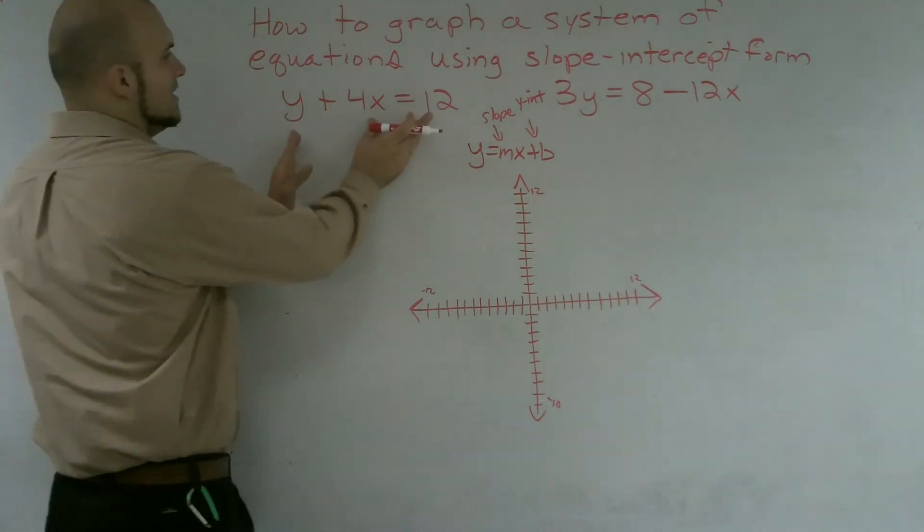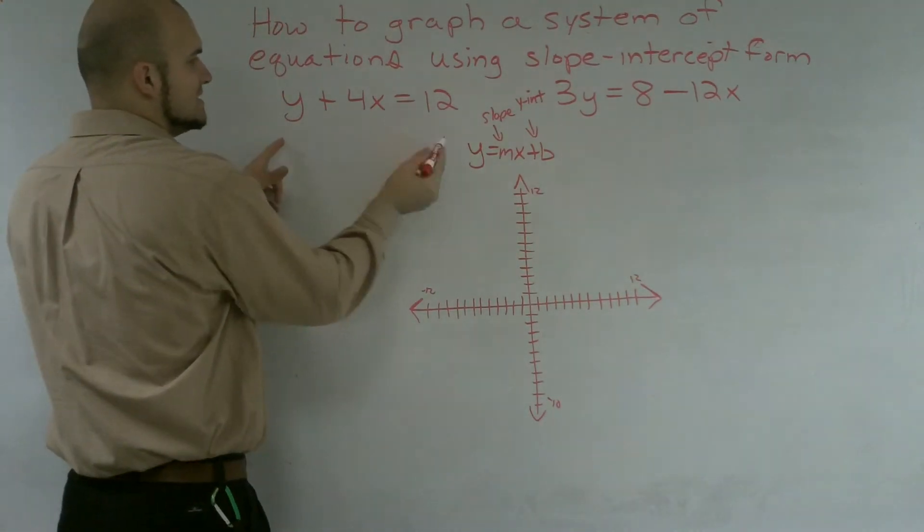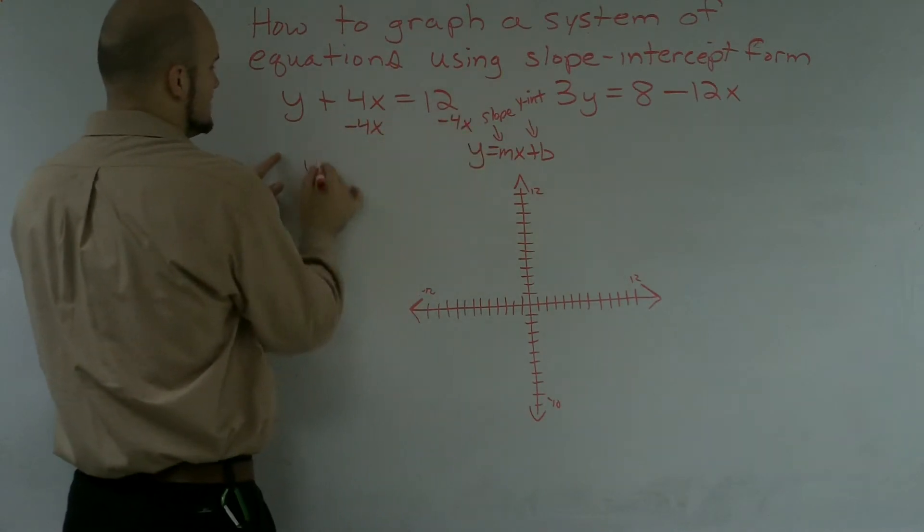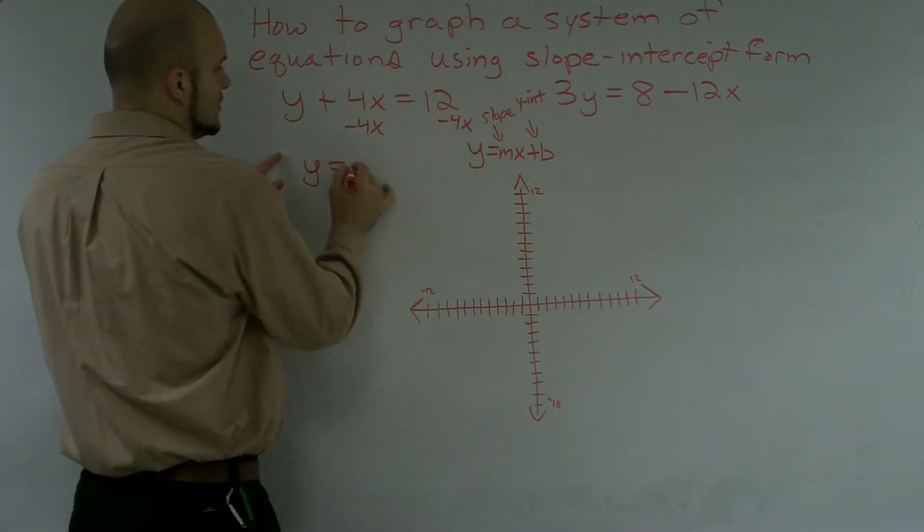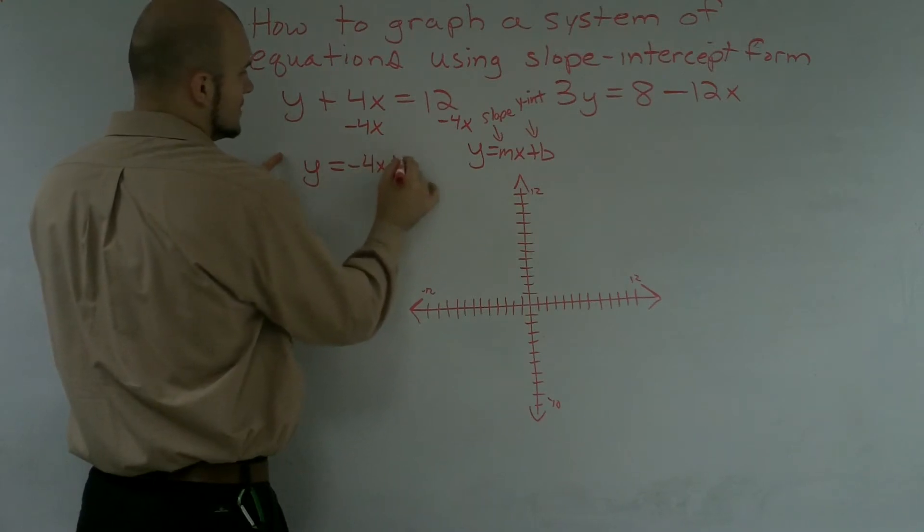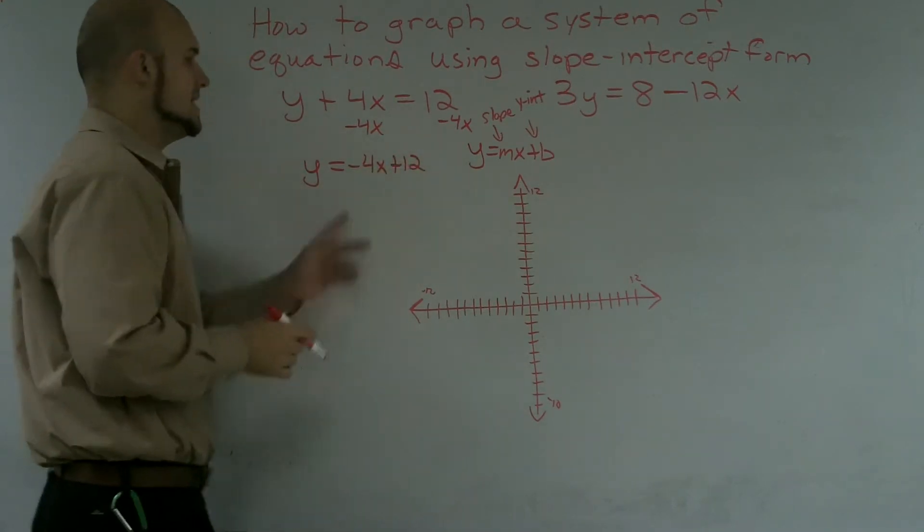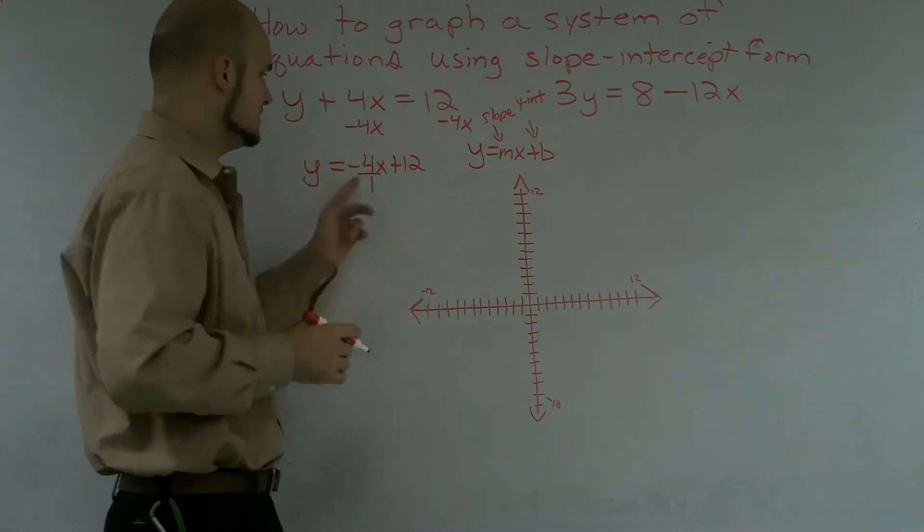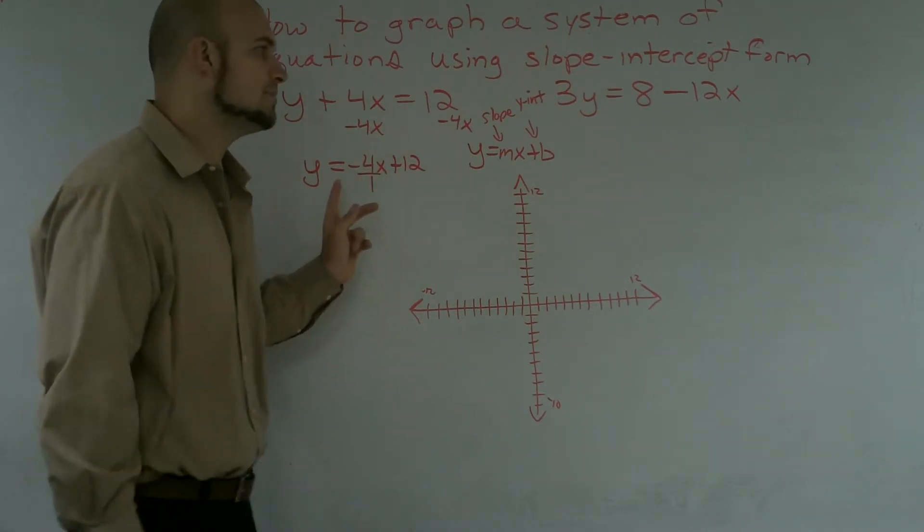So over here, what I notice I'm going to have to do is to get this to y equals, I'm going to have to subtract the 4x on both sides. Therefore, now I obtain y is equal to negative 4x plus 12. And I notice when I have a whole number as my slope, I can always convert that as my rise over run. I just put it over 1. So that's a lot easier for me to be able to plot this.